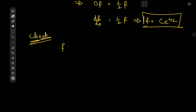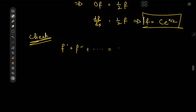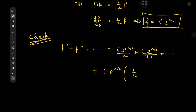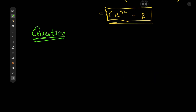For the convergence check: f prime plus f double prime and so on equals c times e to the x/2 times 1/2, plus c times e to the x/2 times 1/4, and so forth. Factoring out c times e to the x/2, we have 1/2 plus 1/4 plus 1/8, etc. — the geometric series which converges to 1. So yes, the infinite sum of derivatives does indeed converge to the function f.